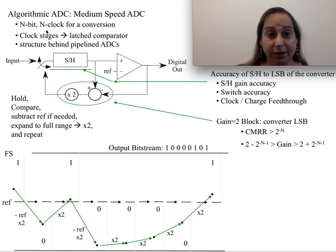At its very simple point, it basically has this case: take the input, hold it, compare it against a known reference. If it's a one, eliminate the reference or subtract some fixed amount from it, then expand it back up to full range, usually multiply by two, and repeat.